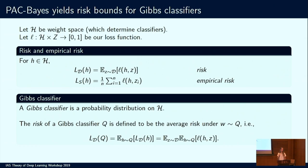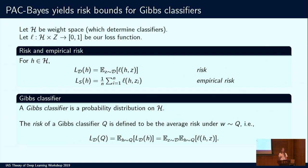The PAC-Bayes framework yields bounds on Gibbs classifiers — randomized classifiers. Let H be the weight space, our hypothesis space. Let L be our loss function mapping hypothesis and training data to an interval of 0 and 1. The risk is the expected loss, and the empirical risk is the average of losses over our training data. A Gibbs classifier is a probability distribution over H, and the risk of Q is defined as the average risk under samples from Q — the expected risk where the expectation is taken over the randomized classifier Q.